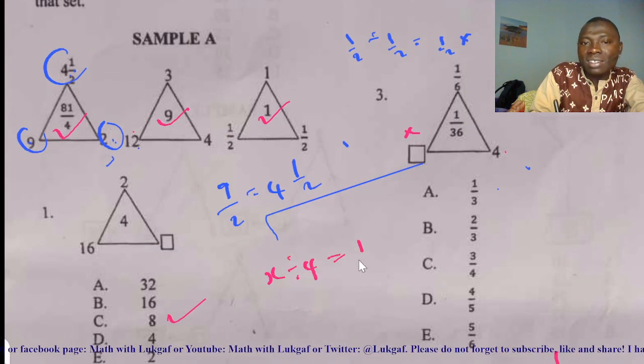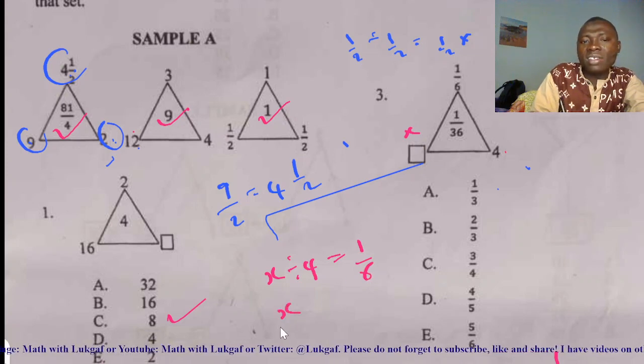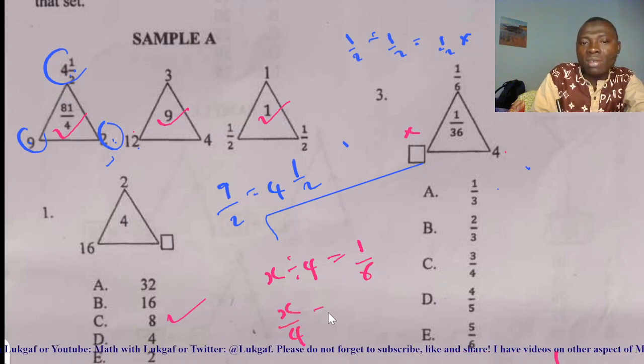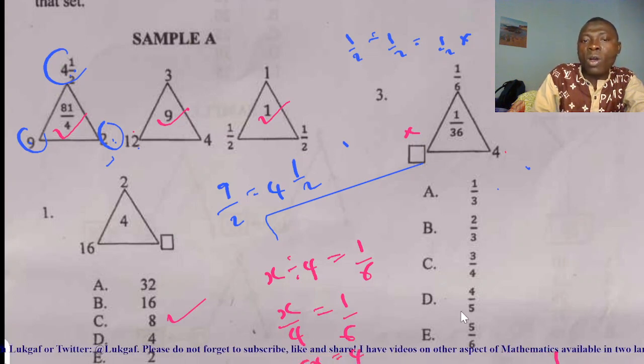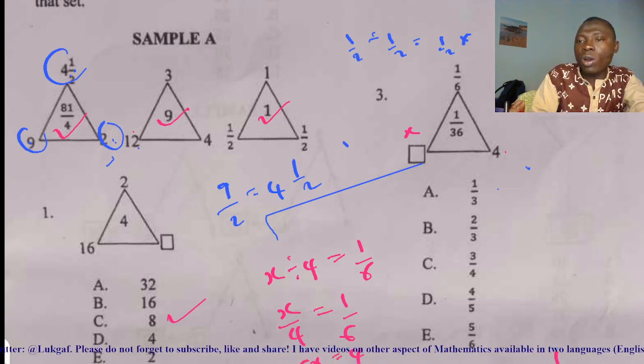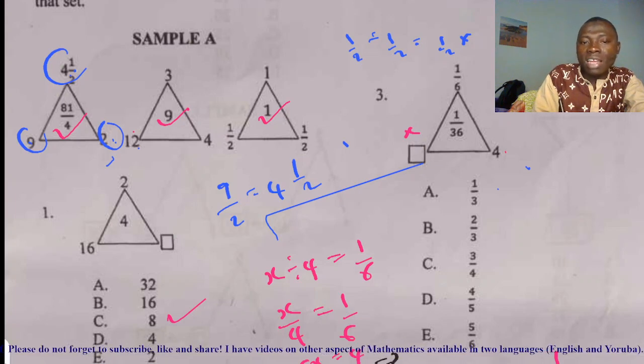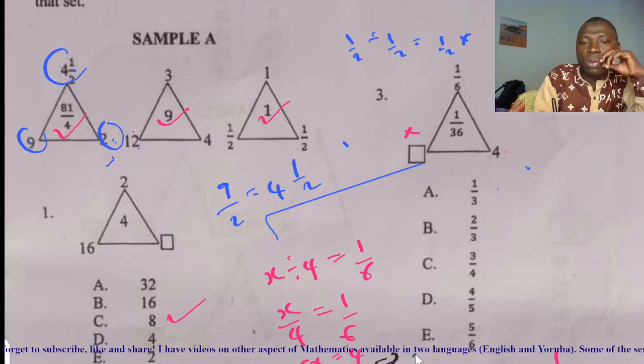Find the value of x. That's x divided by 4 is equal to 1 divided by 6. Then you are going to have 6x equal to 4. So then if you divide both sides by 6, your x will now be what? x will now be 4 divided by 6.